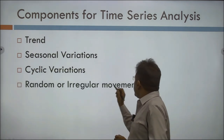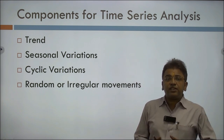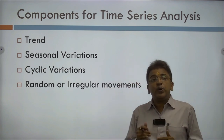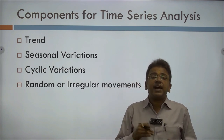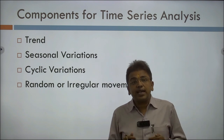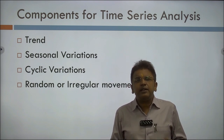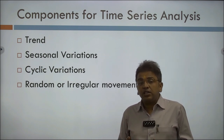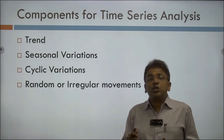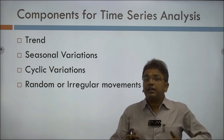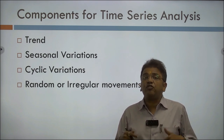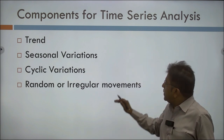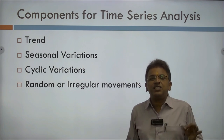Then there are random or irregular movements. These are certain factors not in the hands of human beings — they happen due to nature, such as earthquakes, volcanoes, or any pandemic or epidemic. This component is in the hands of nature, not man, and according to that occurrence we take it into consideration for proper decision making.